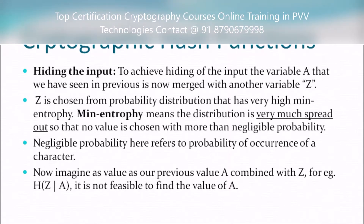The next feature of cryptographic hash functions is hiding the input. To achieve hiding the input, the variable 'a', which we have seen in the previous slide, will now be merged with another variable 'z'. 'z' is chosen from a probability distribution that has very high min-entropy, which means the distribution is very much spread out so that no value is chosen with more than negligible probability.